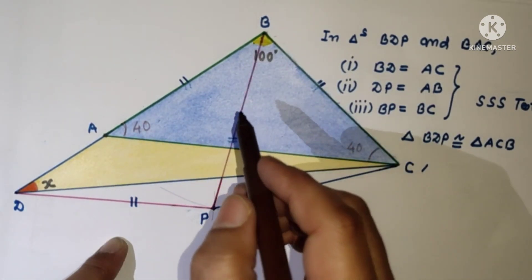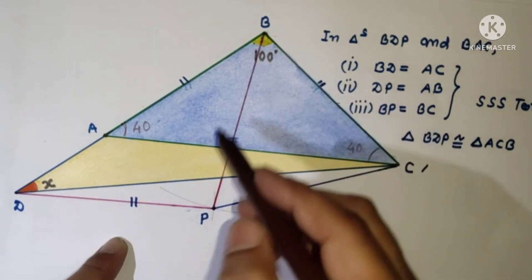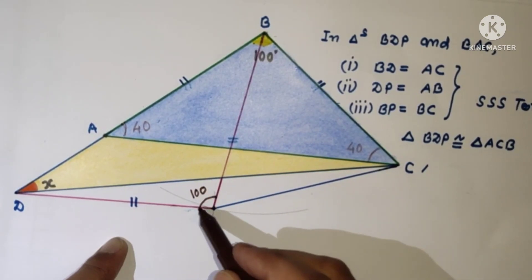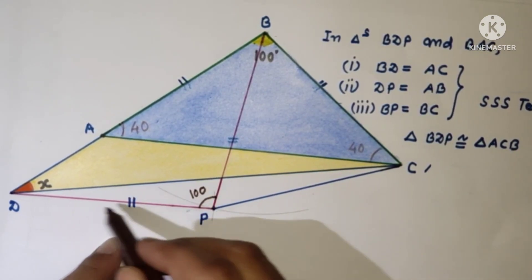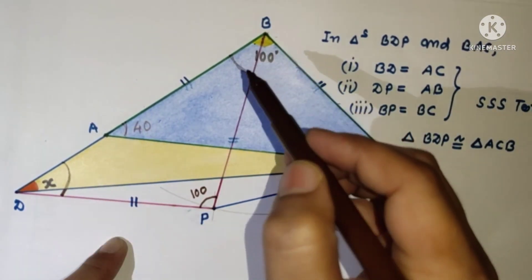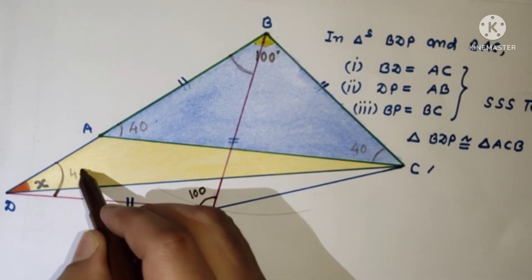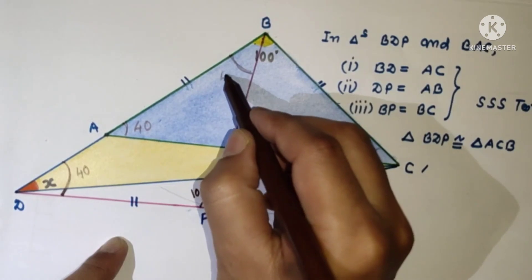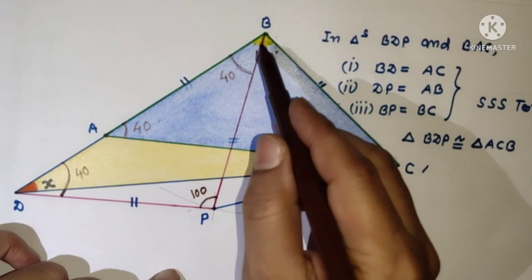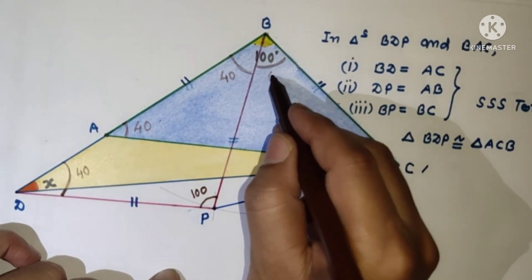We proved the two triangles are congruent. The angle opposite to AC is 100 degrees, therefore the angle opposite to BD is also 100 degrees. Since those two sides are equal, the two base angles of triangle BDP are also equal: 180 minus 100 is 80, divided by 2 gives 40 degrees.